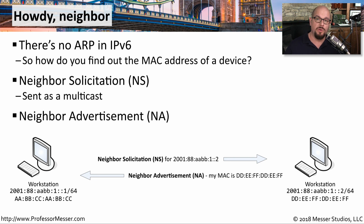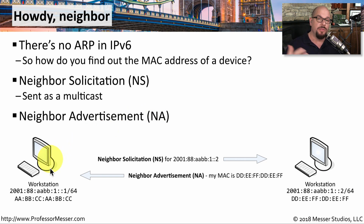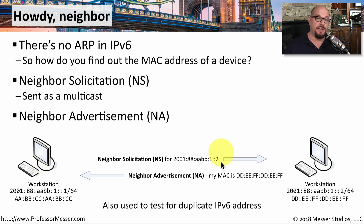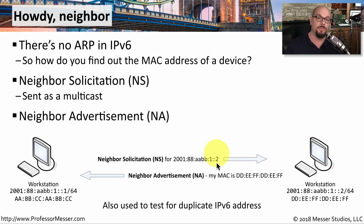There is no Address Resolution Protocol in IPv6 like we have in IPv4. So in order to perform that same function, we have a neighbor solicitation and a neighbor advertisement, often referred to as NS and NA. The neighbor solicitation is for one workstation to find the MAC address of another workstation. It sends a multicast neighbor solicitation for a specific IPv6 address, and the device that owns that address sends back a directed frame that includes the MAC address. Now these two devices have all the information they need to communicate. You might also see neighbor solicitation used to test for duplicate IPv6 addresses — a workstation sends a neighbor solicitation, and if it doesn't receive a response, it concludes that the address is available to use on the network.